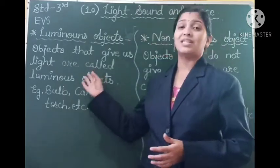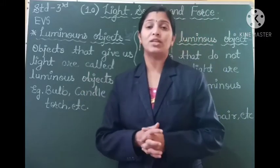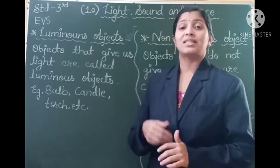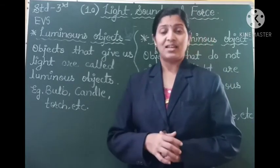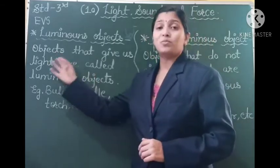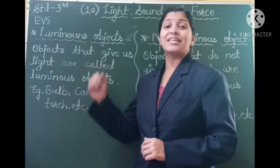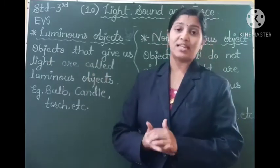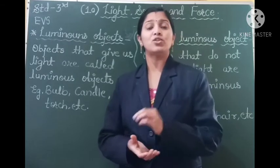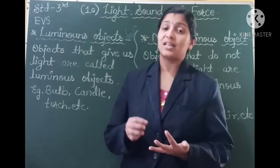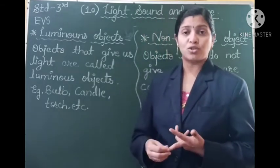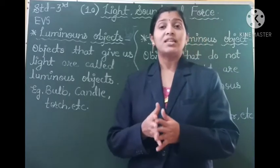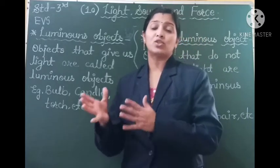Here you can see the definition for luminous objects. Luminous objects are the objects that give us light. So the definition is: objects that give us light are called luminous objects. The examples for luminous objects are candles, lamps, torches, bulbs, etc. The sun is a natural luminous object.